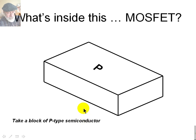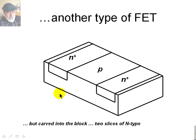And in that one, we will carve not one, but two wells, like so, and we'll fill them up with heavily doped N-type materials, one here and one there.